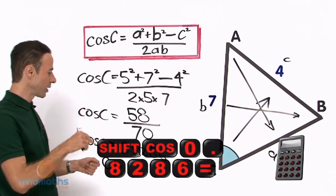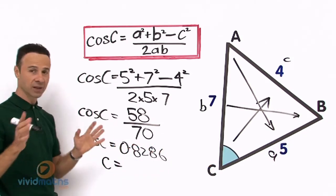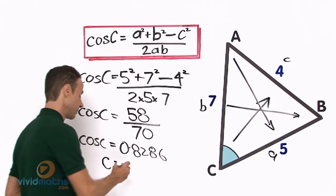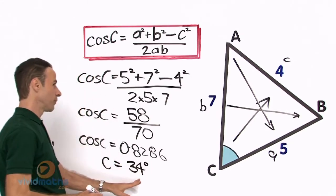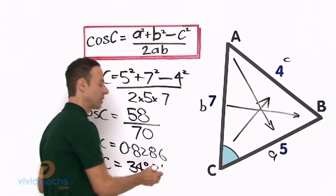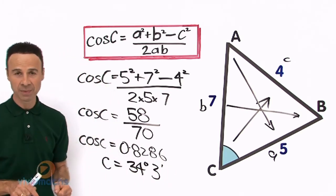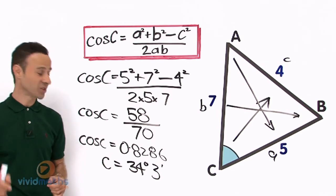So shift cos 0.8286 gives us an angle of 34 degrees and 3 minutes after you press shift DMS or shift degrees minutes seconds.